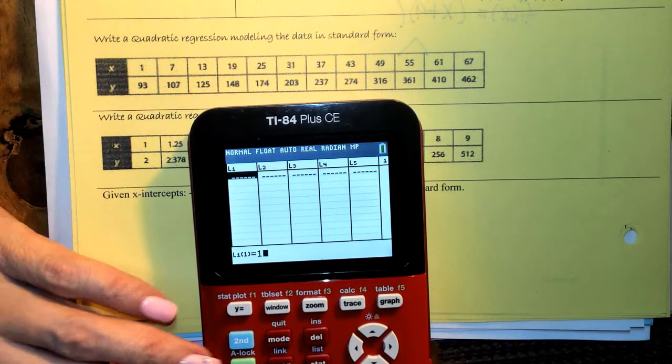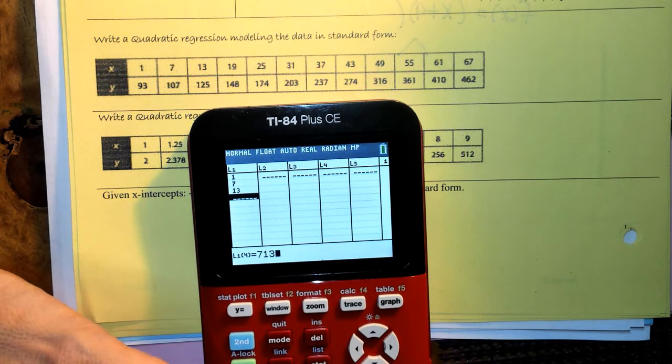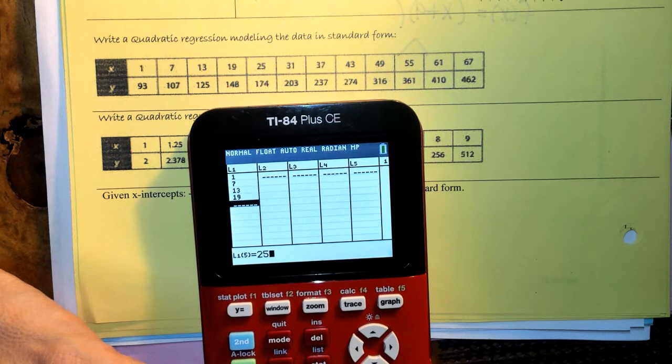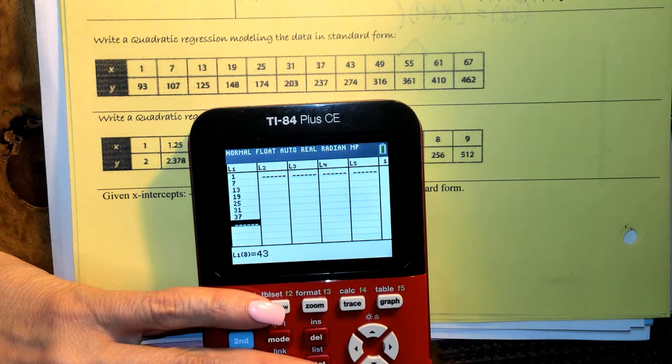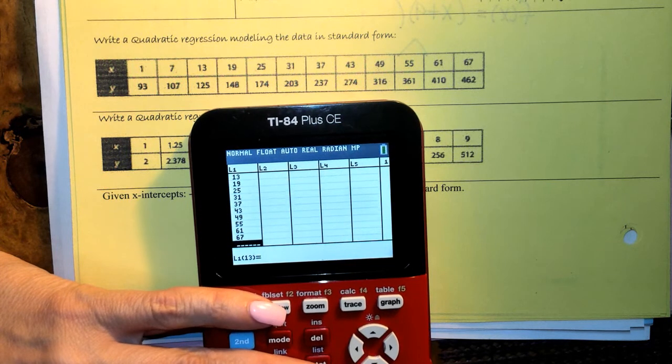So I'm going to do 1, enter, 7, enter, 13, enter, 19, 19, 25, 31, 37, 43, 49, 55, 61, 67. All right.